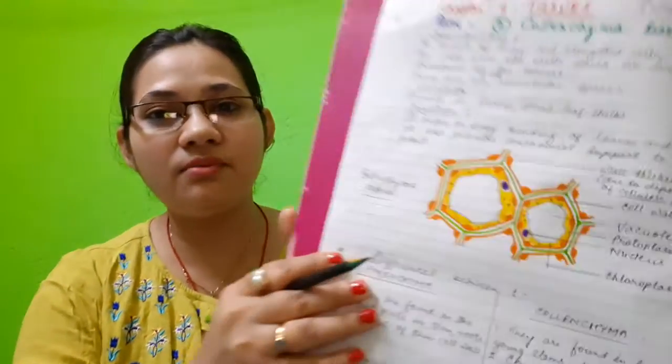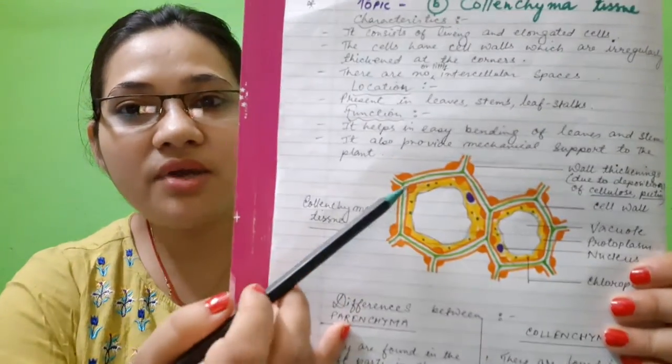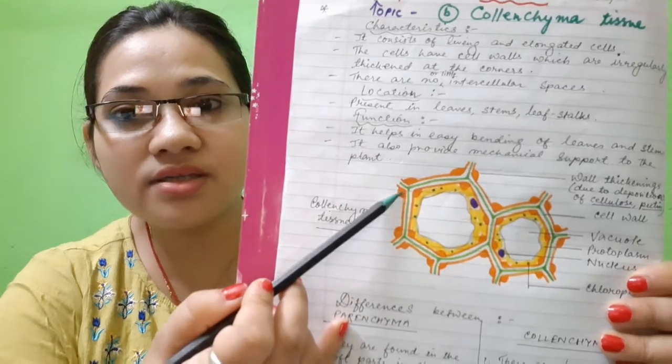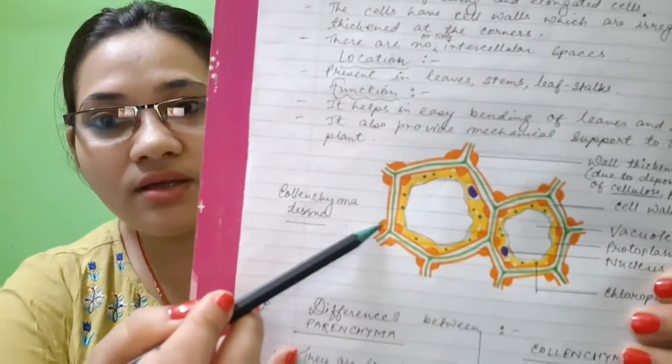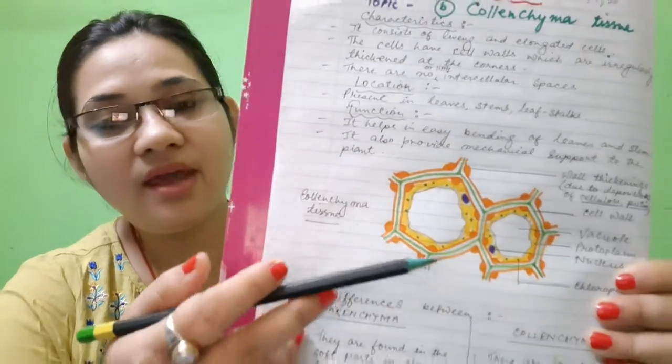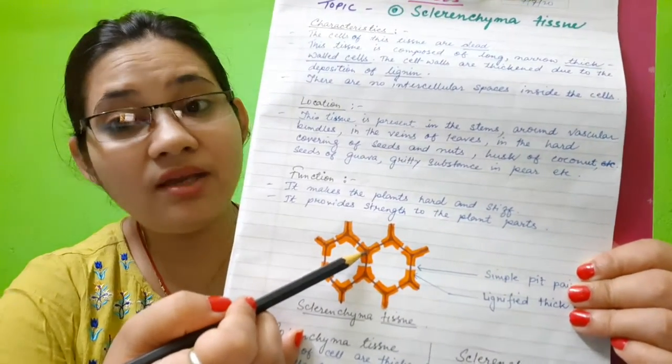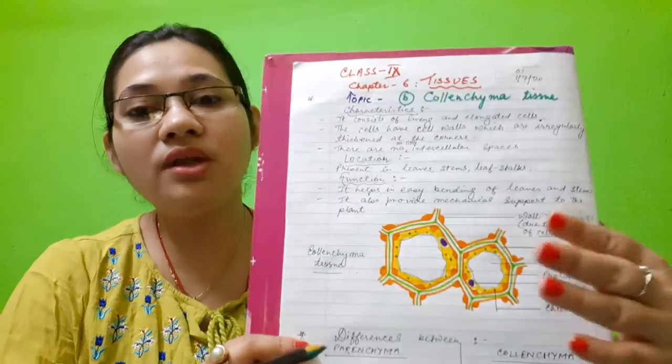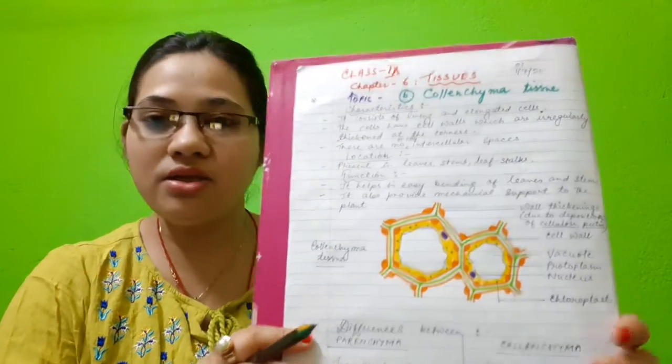The difference between sclerenchyma and collenchyma is that in sclerenchyma, the walls are uniformly thickened. But in collenchyma, the walls are thickened at the corners. Collenchyma cell walls are thickened at the corners because of the deposition of cellulose and some pectin. But in sclerenchyma, wall deposition is because of lignin, so they are called lignified. That is the basic difference between collenchyma and sclerenchyma.